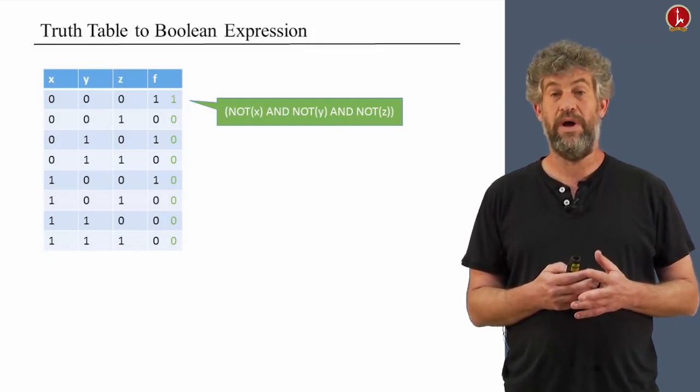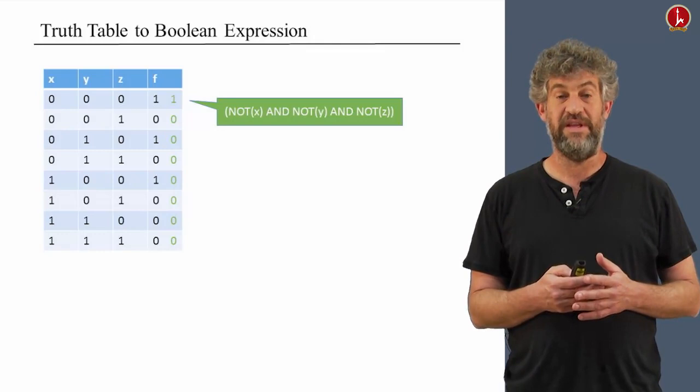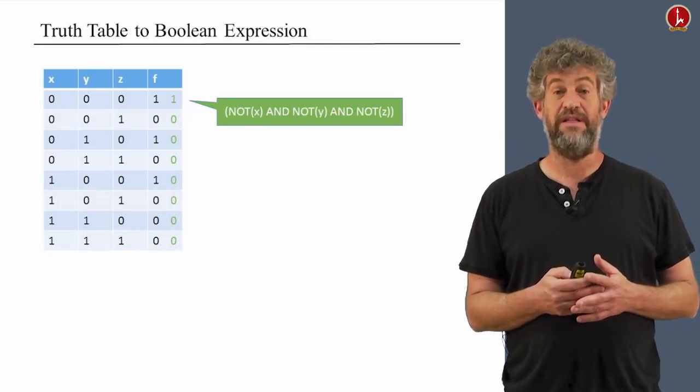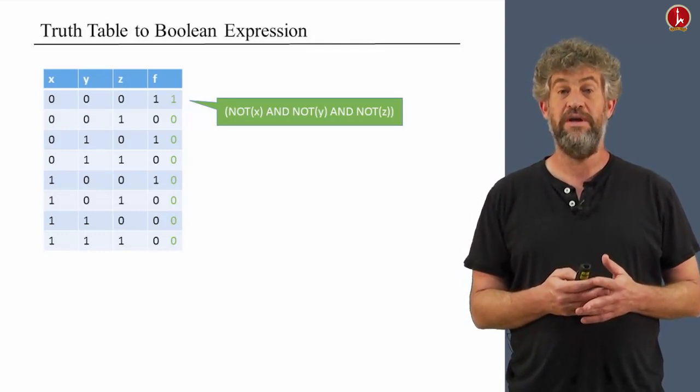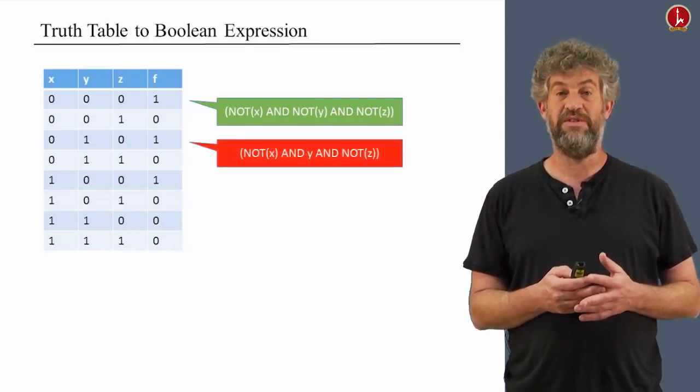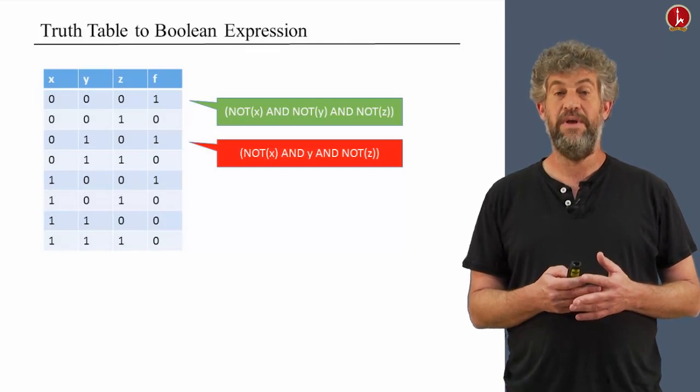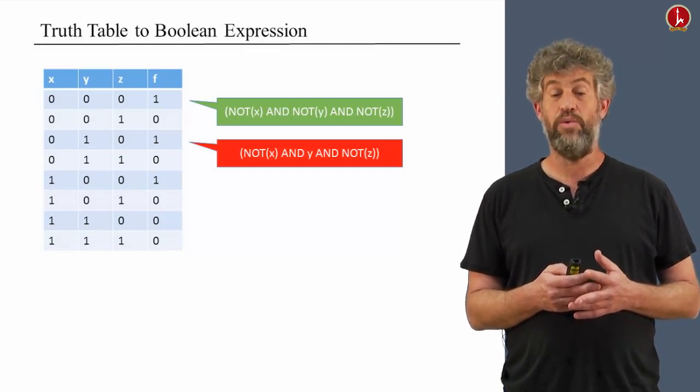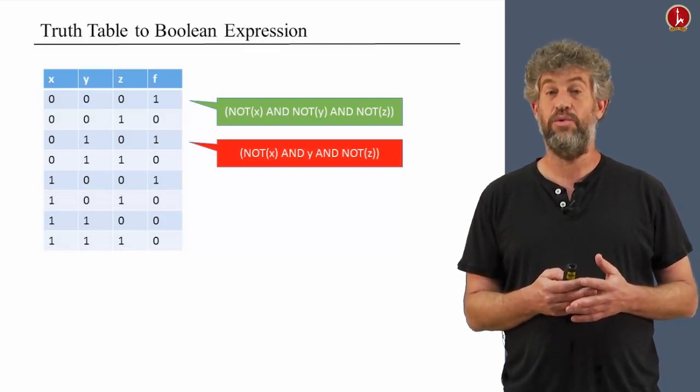So now we have one Boolean function. We do the same thing, we construct another Boolean function, another clause for each row that has a value of 1. So for example, there's another second row with a value of 1. This time, in this row, y equals to 1, while x and z equal to 0.